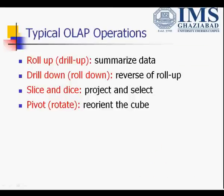There are generally four types of OLAP operations. The first is roll-up, which is used to summarize data. The second is drill-down, which is used to go into the detail of data from lower detail to higher detail — it is simply the reverse of roll-up. Slice and dice are generally used for projecting and selecting the database. And pivot or rotate is used to reorient the cube or reshape the 3D cube into a 2D view. Let's discuss all the operations in detail.